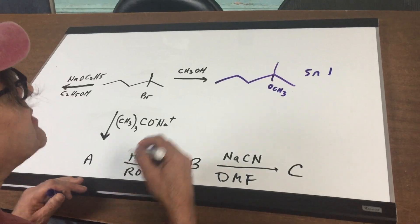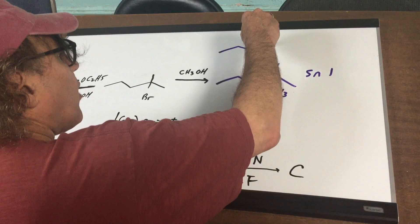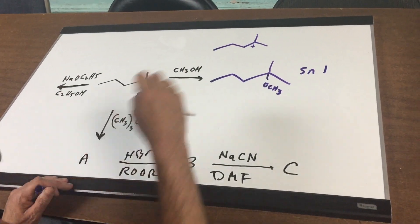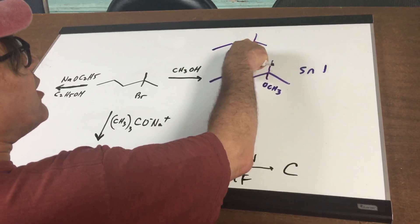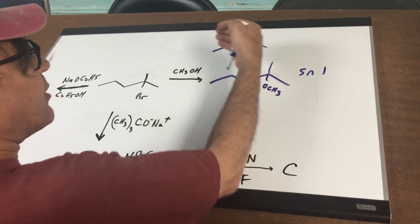Now competing against the SN1 mechanism is the E1 mechanism. So we go back, we form our same carbocation and what we could do instead of attacking this, we can remove an adjacent hydrogen. Always go internal,